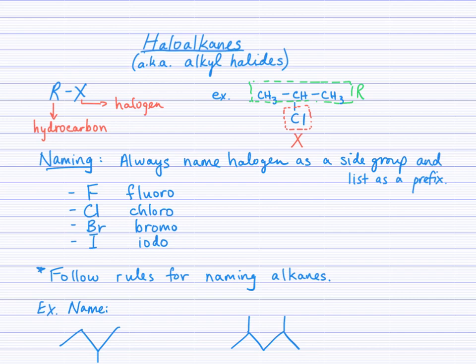We're going to be using general forms of the different organic families when we get to the reactions, and so I'll just introduce the notation RX to represent a haloalkane. As you can see in the note here, the R section indicates a hydrocarbon and the X is the halogen that has replaced one of the hydrogens on that hydrocarbon.